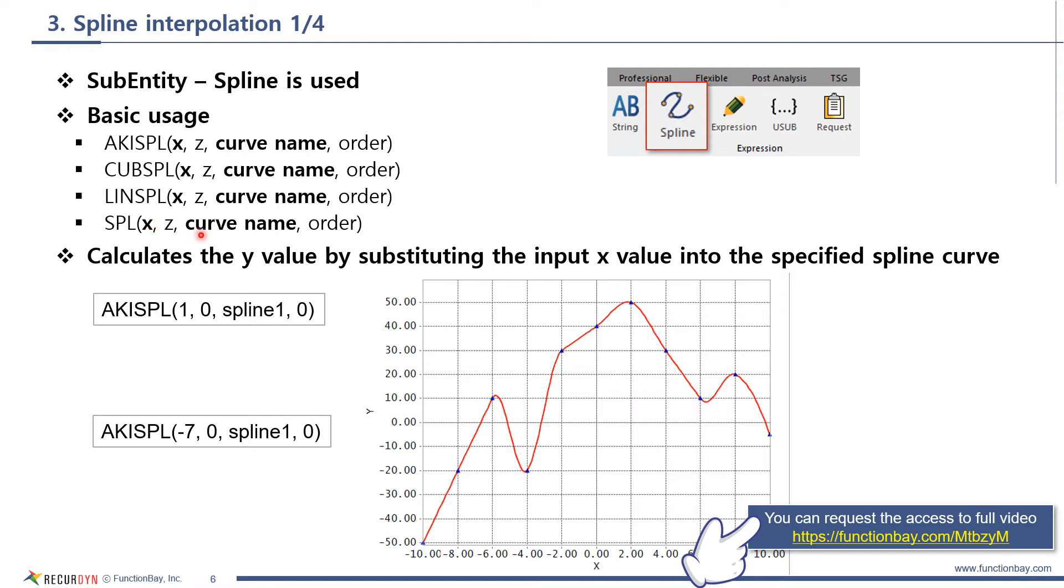What really matters is the first argument and the third argument. You can think of this interpolation as a function that takes the value of the first argument as the x value, and substitute it for the specified spline curve. Then, you can get the y value. As you can see, if x is 1, the y value is determined from this spline curve. Similarly, if x is minus 7, then the y value is determined from this curve.